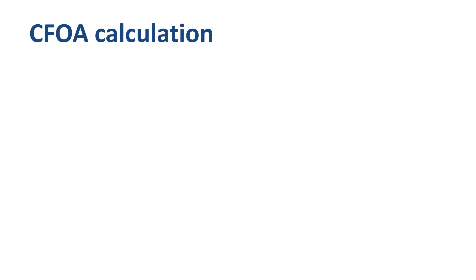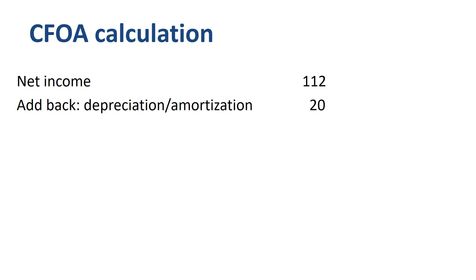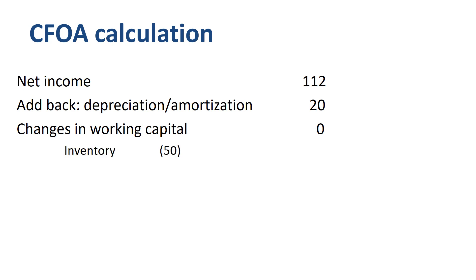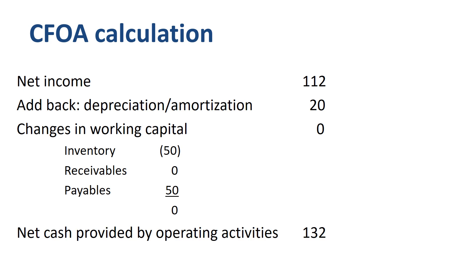Let's summarize the items we have found so far. In the indirect method of cash flow reporting, you start off with net income of 112. You add back non-cash items such as depreciation of 20, and then list the changes in working capital. In this example, the total change in working capital is zero — underlying that is an increase in the inventory balance, which is a cash outflow, and an increase in the accounts payable balance, which is a cash inflow. Total net cash provided by operating activities is 132.